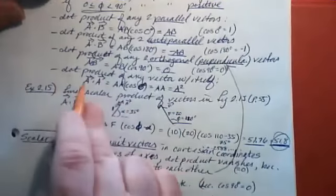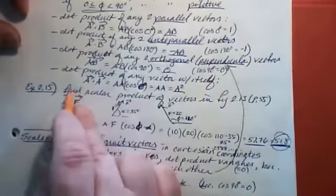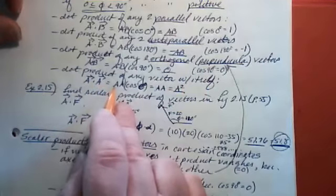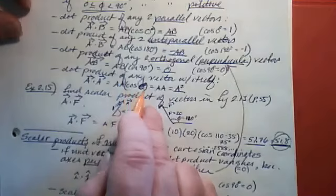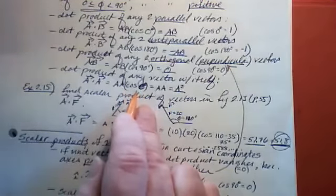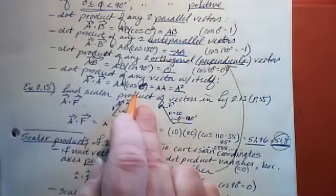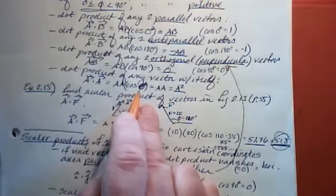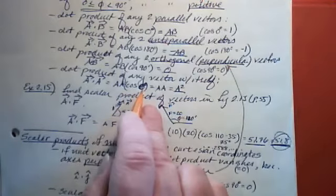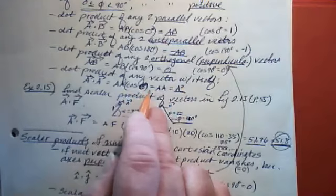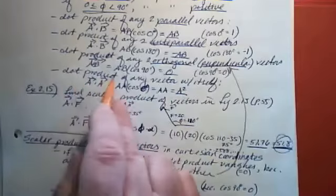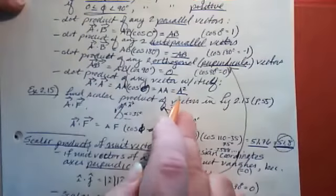Finally, the dot product of any vector with itself — for instance, vector A · vector A — equals the magnitude of A squared. Since A obviously points in the same direction as itself, the angle between A and itself is 0, and cosine of 0 is 1. So A · A = A² — the magnitude of that vector squared.